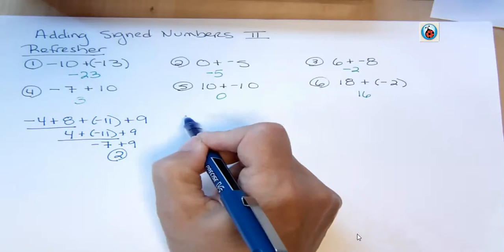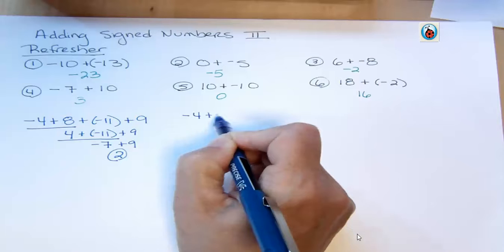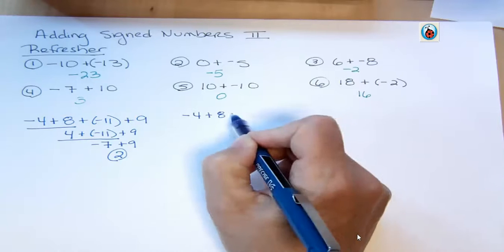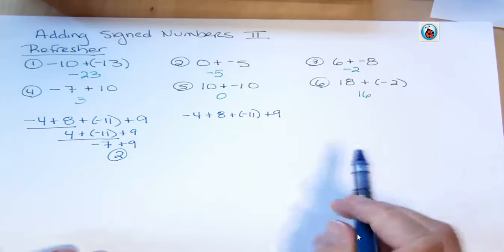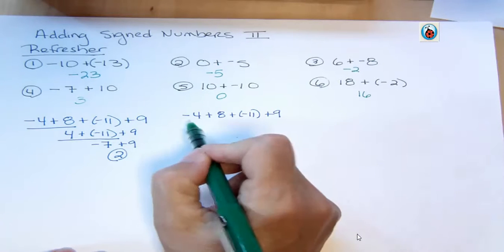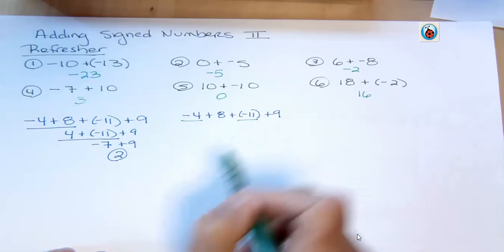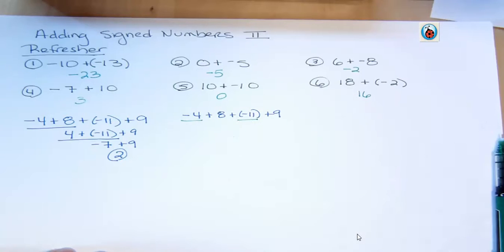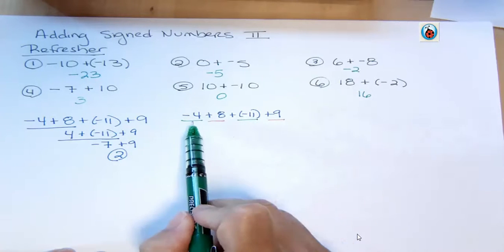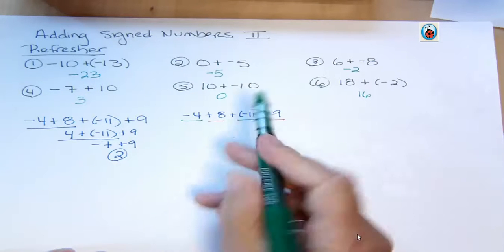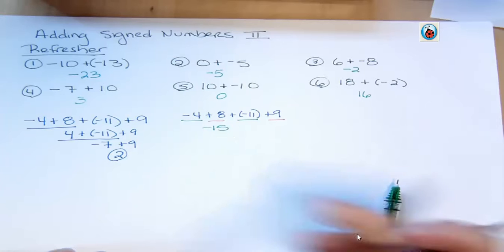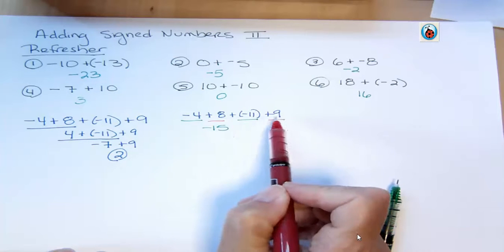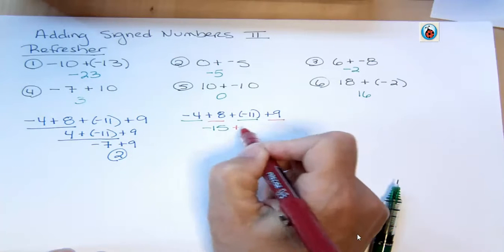Now here's another way, and this is how I actually work these problems. I don't do it the way I just showed you, but that works too. What I do is I add together all of these numbers with the same sign. I add together all my negatives, and I add together all my positives, and then I combine those once. So how many negatives do I have? Well, I have 4 and 11 more, so I have a total of 15 negatives. How many positives do I have? Well, I have 8, and I have 9. 8 plus 9 is 17, so I have 17 positives.